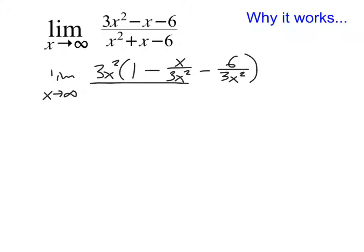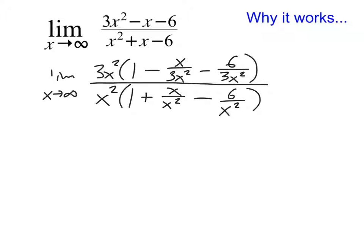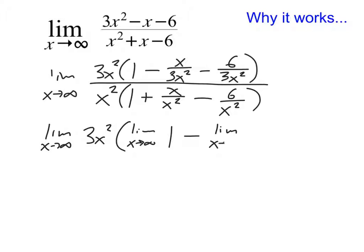Then I do the same thing on the bottom. On the bottom, I look for the biggest exponent term — that's x squared. So it's x squared, then in parentheses, factoring it out of every term: 1 plus x over x squared minus 6 over x squared. Now I can use those limit rules that say I can take the limits of everything individually. This can become the limit of 3x squared times the limit of 1 minus the limit of x over 3x squared.